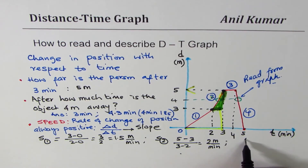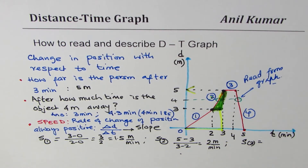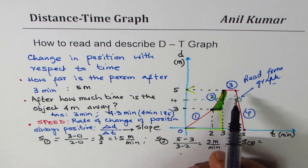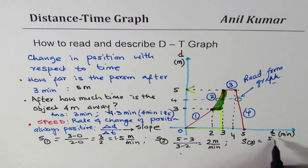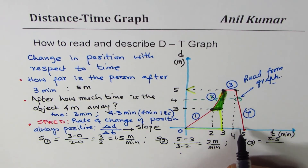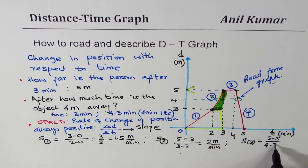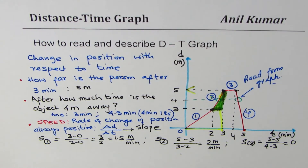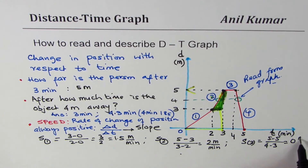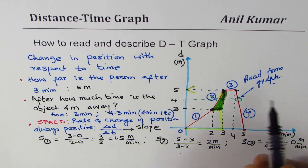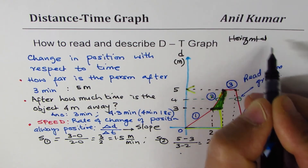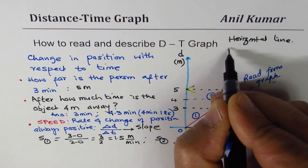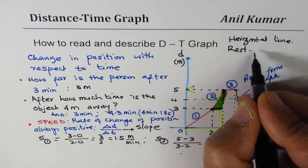For leg three, the line is horizontal, which means the person is at rest. The change in distance is 5 − 5 = 0, divided by the time interval 4 − 3 = 1. Speed = 0 meters per minute. A horizontal line on a distance-time graph always means rest — speed is zero.